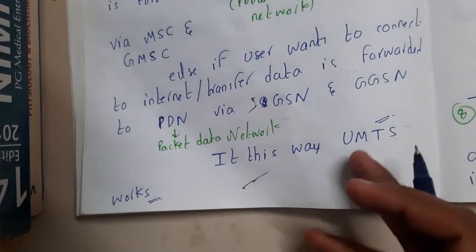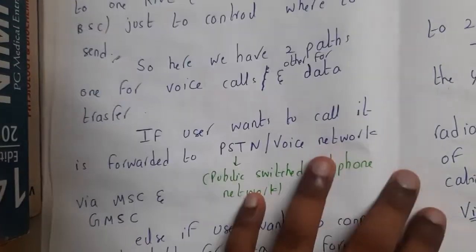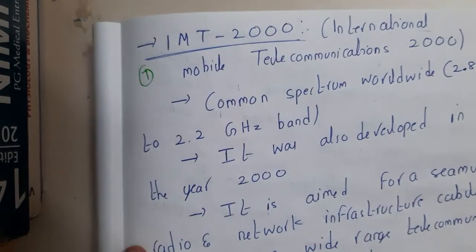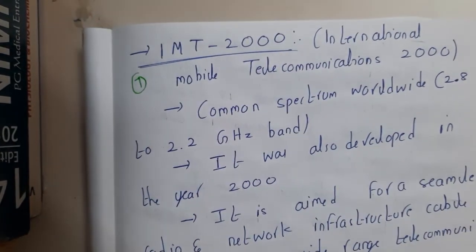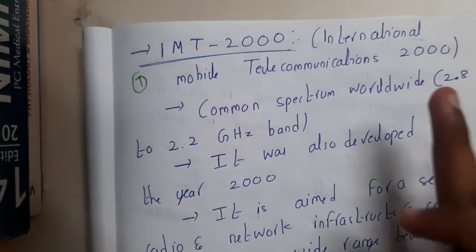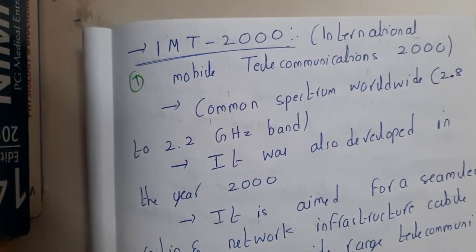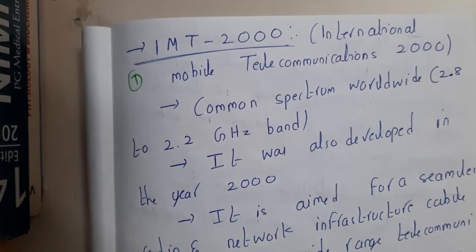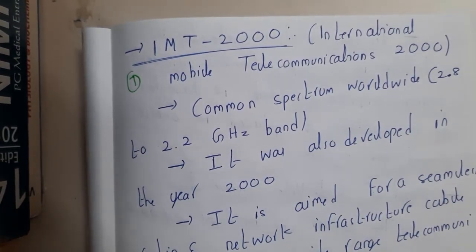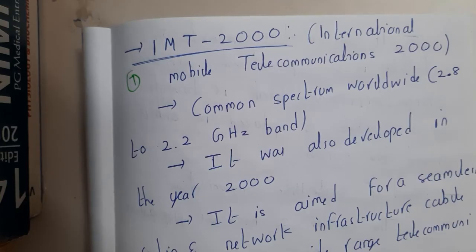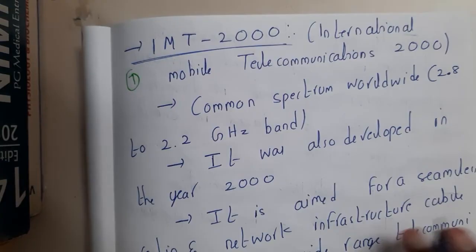I hope everyone got a clear idea about how UMTS works. In the next lecture, I will be going through what you can call the last version of GSM — that is IMT2000. I did not find very detailed information about it, so I'll just go through the introduction and the main goals of IMT2000. See you in the next lecture, thank you for watching.